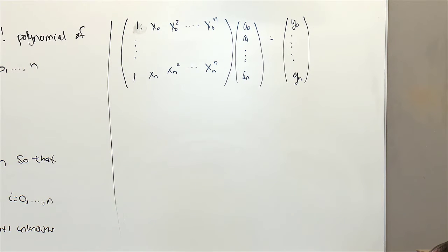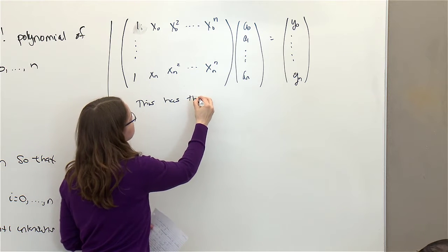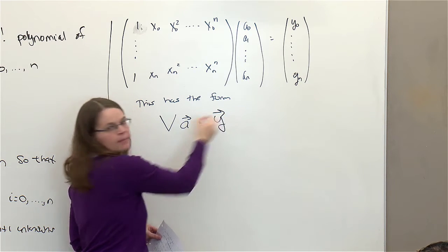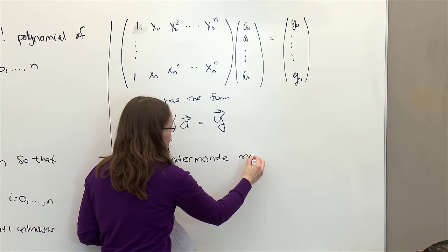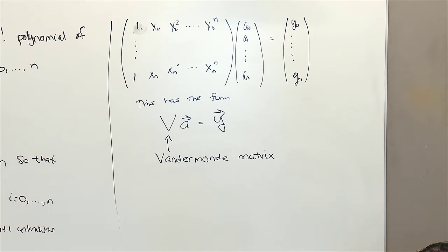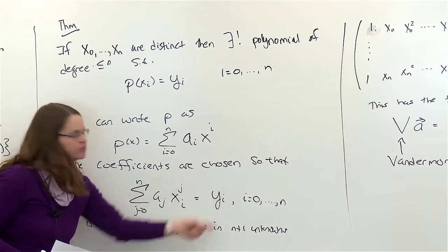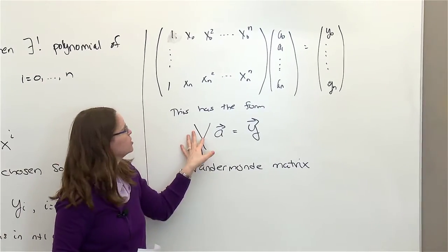In compact form, this has the form of some matrix V times my vector of unknown coefficients equal to my vector of y's — and this is called the Vandermonde matrix. Our question is: is this a well-posed problem? Can I really find a vector of a's that will make this true — that makes me fit all my data points? So what I'm really asking is: is this a well-posed linear system? In other words, is this matrix invertible? If I can invert this matrix, then no matter what data you give me, I'll be able to solve for the a's.